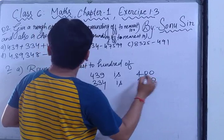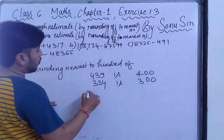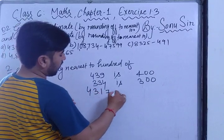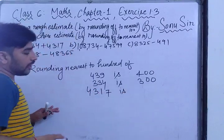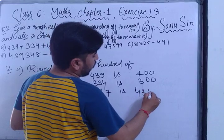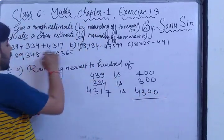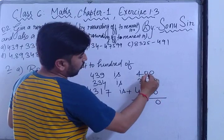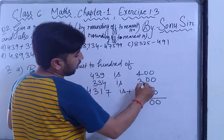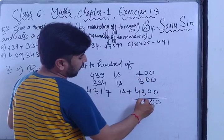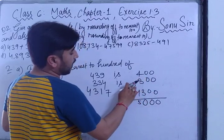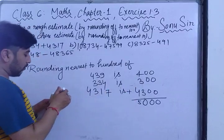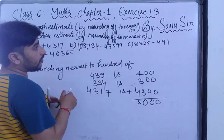The second number rounds to 300, and the third one is 4317 — the nearest value to hundred is 4300. We add all three: 400 + 300 + 4300, and the answer is 5000 when rounded to the nearest hundred.